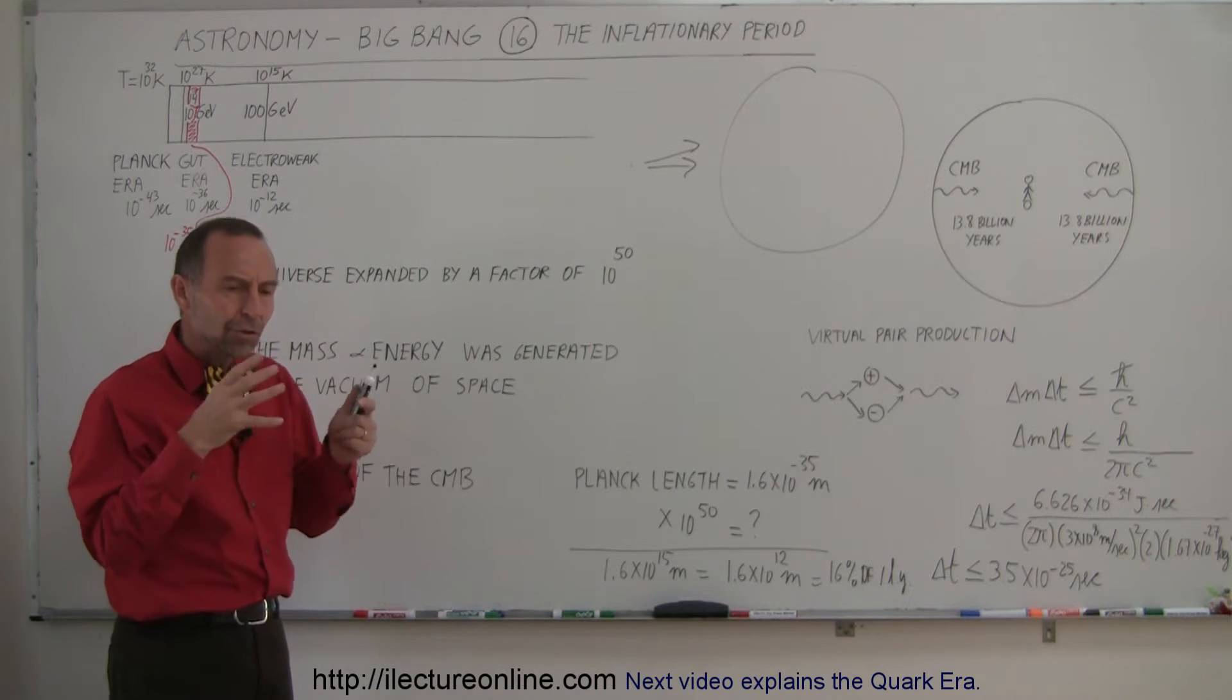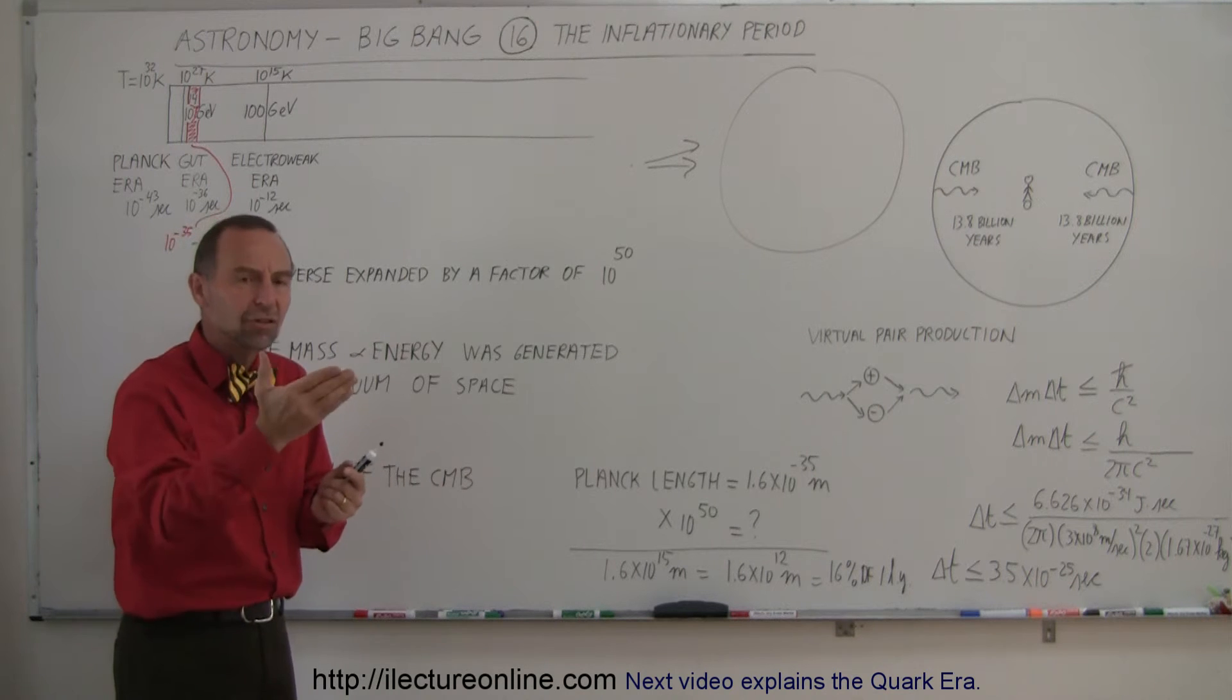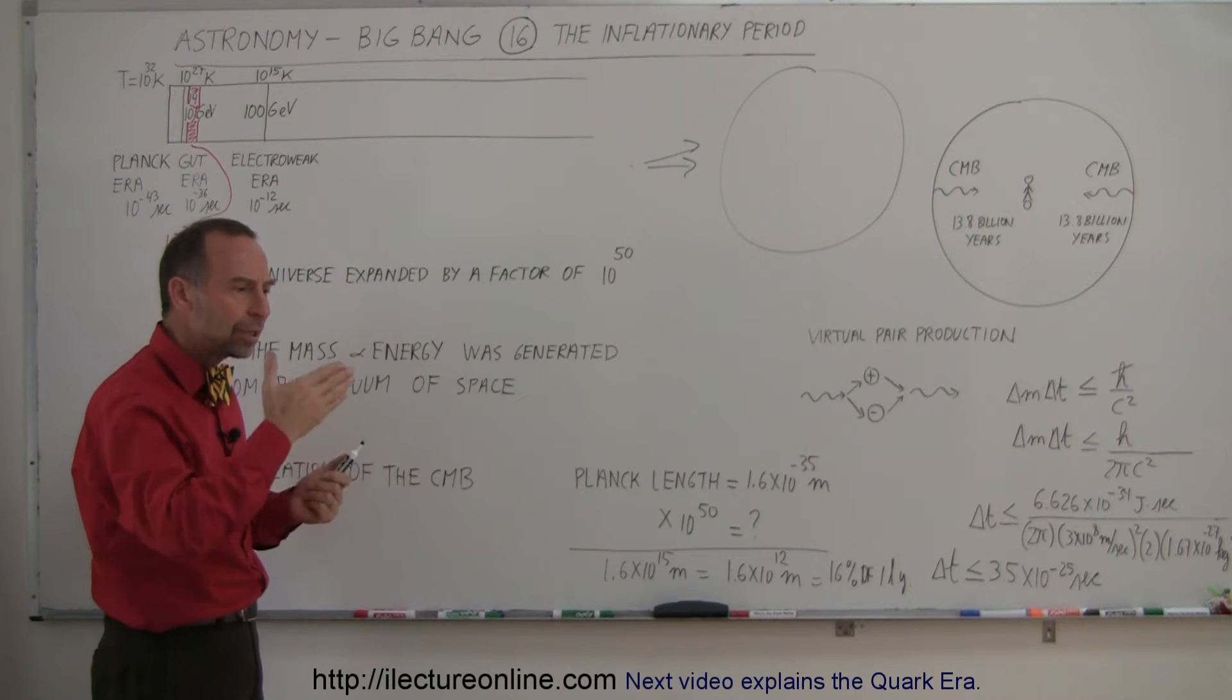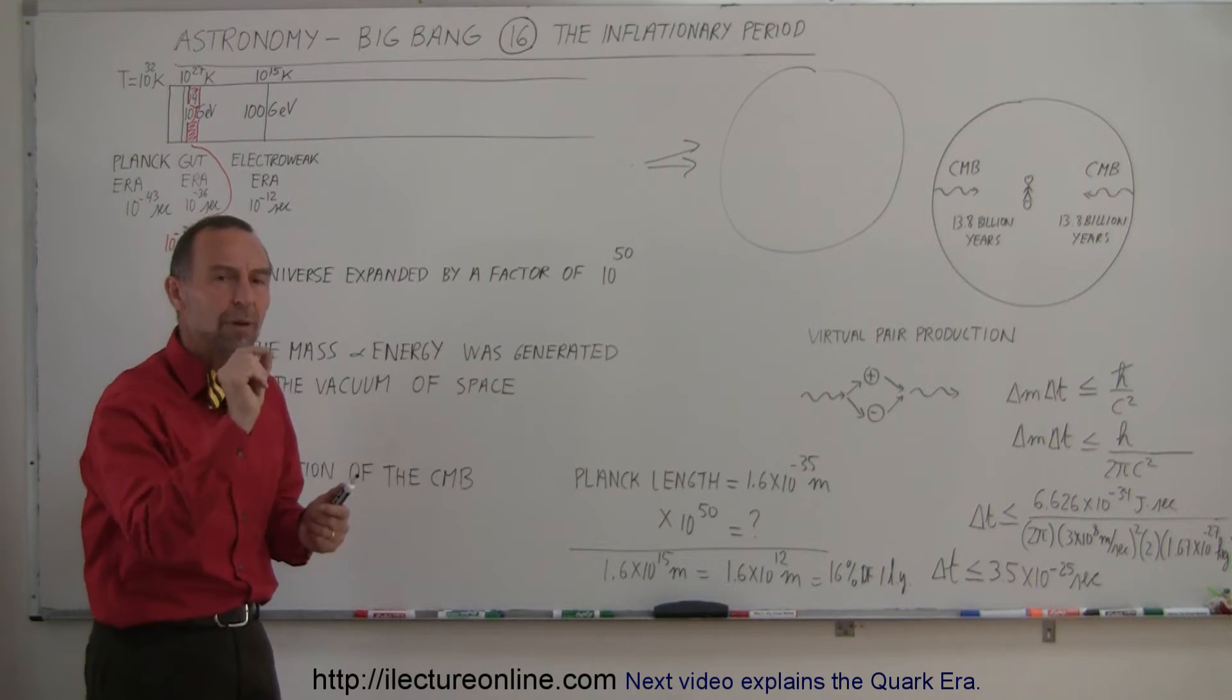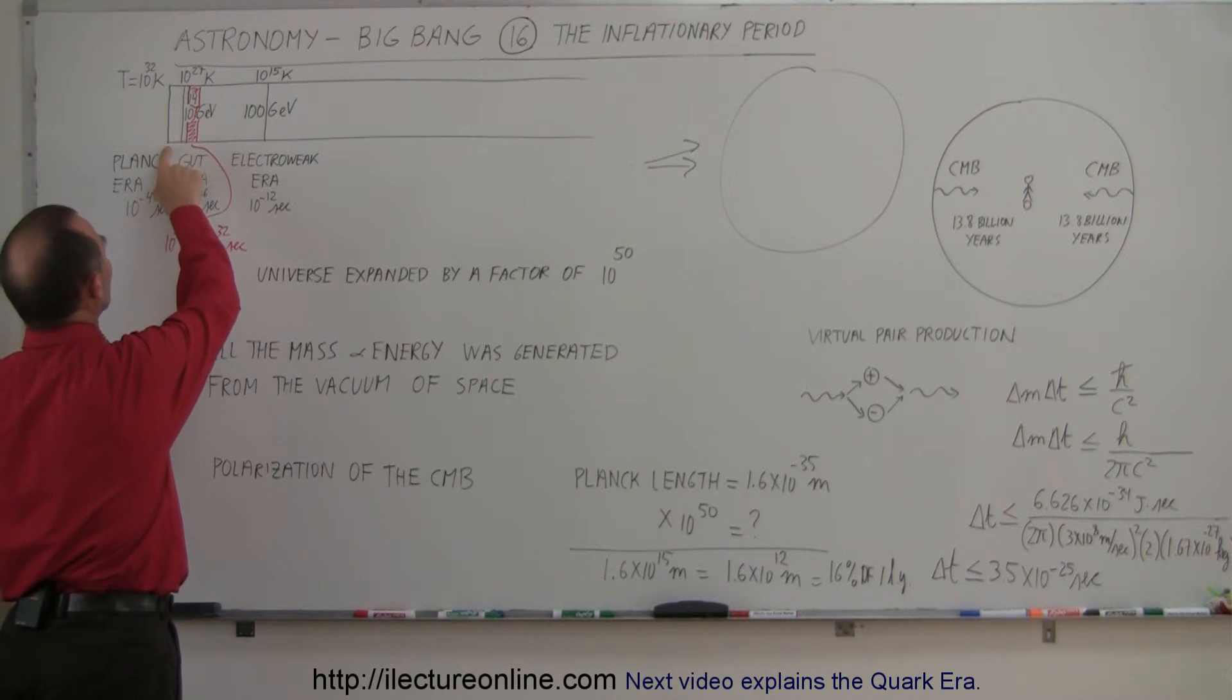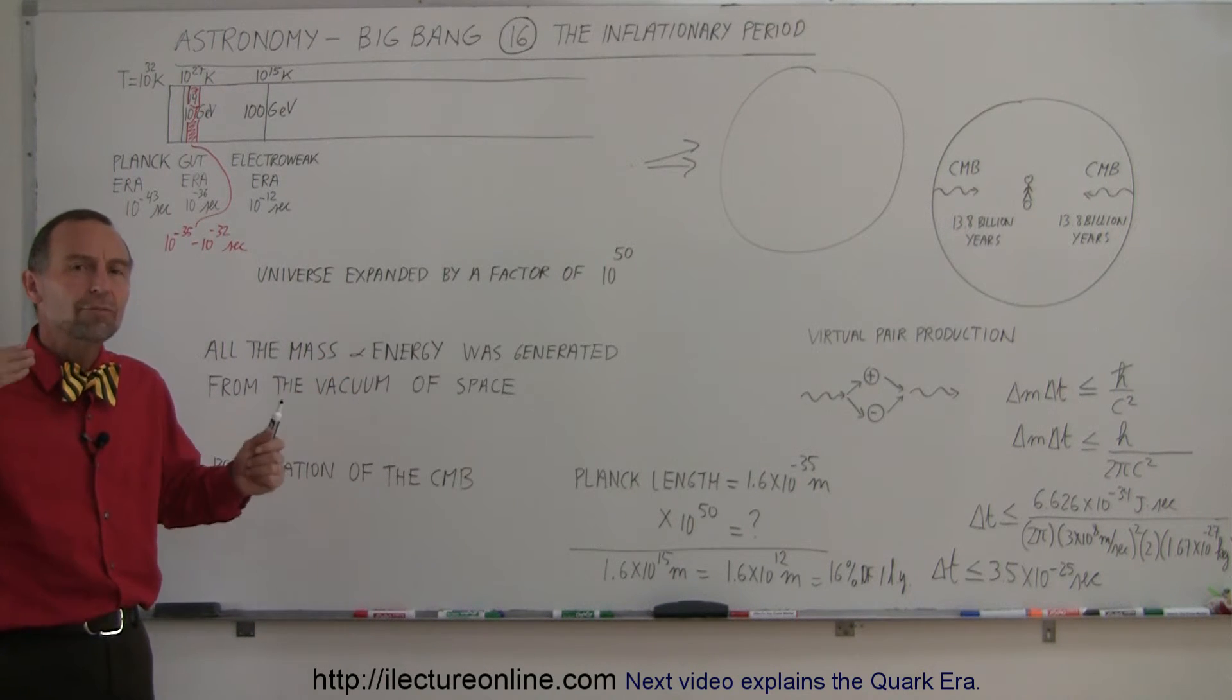To get some idea of how big the universe may have been after inflation, let's go back to the smallest distance that could exist possible in the universe, which is considered Planck length. We already know that energy is quantized, mass is quantized, time is quantized as we could see in Planck's time. We can also imagine that distance is quantized, it must be quantized. We determined that there's such a thing as Planck length at 1.6 times 10 to the minus 35 meters. That is the smallest possible distance that can exist in the universe. The universe had to be at least Planck length in size when it began to inflate.